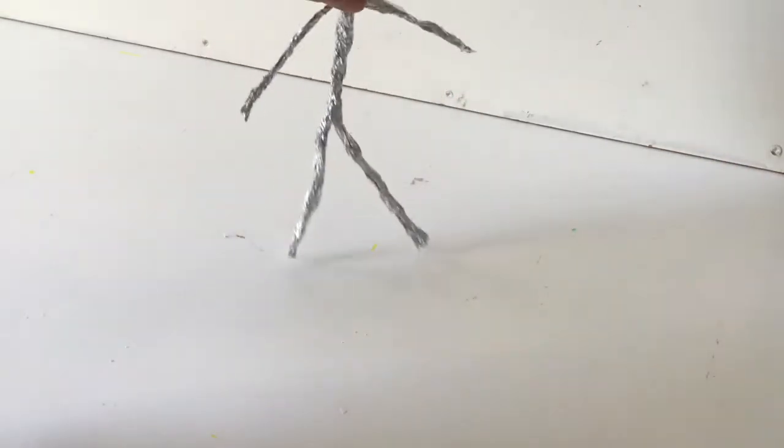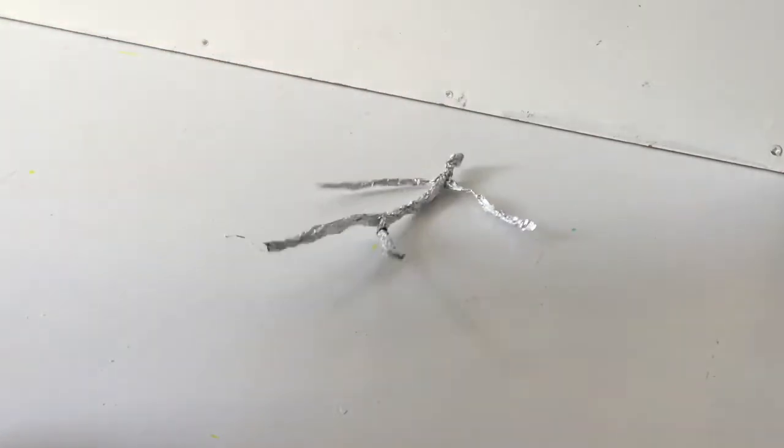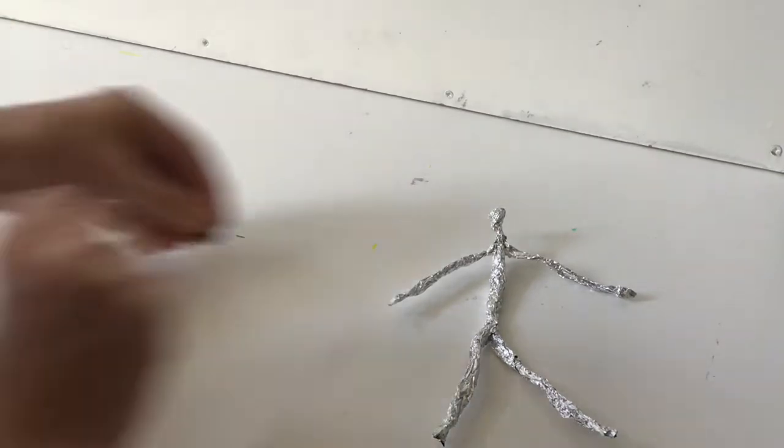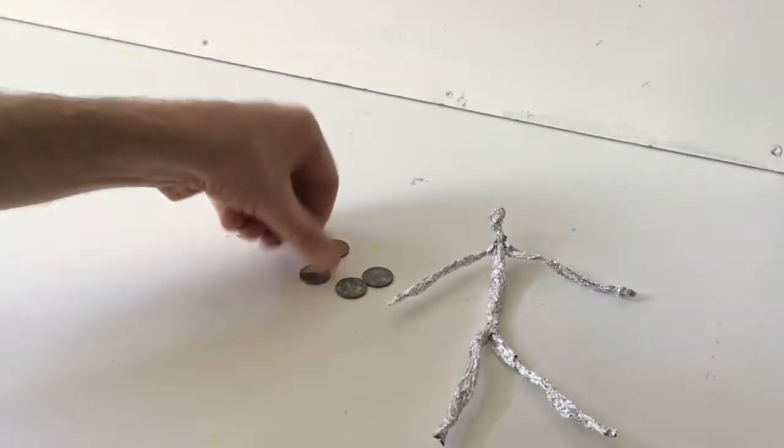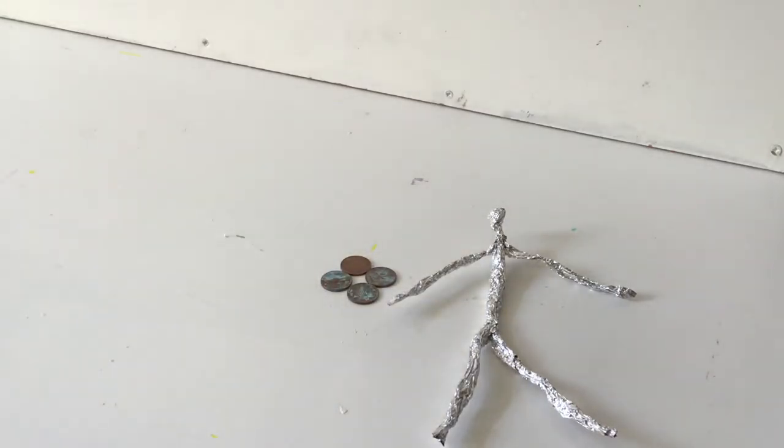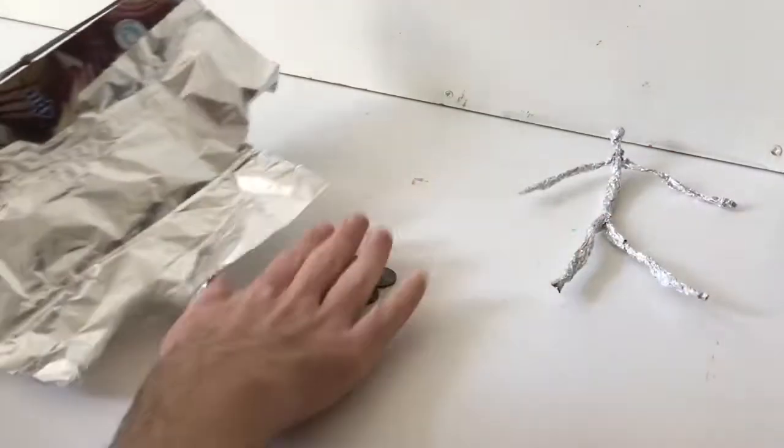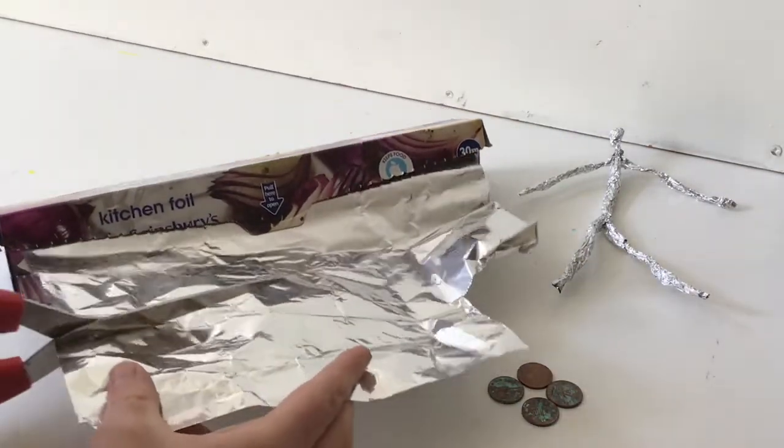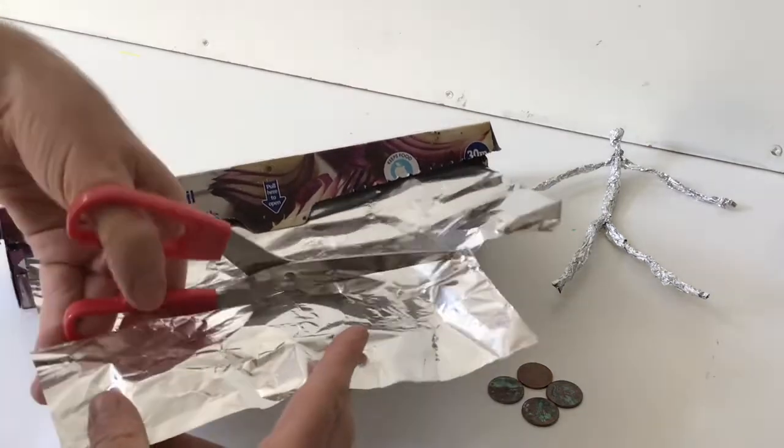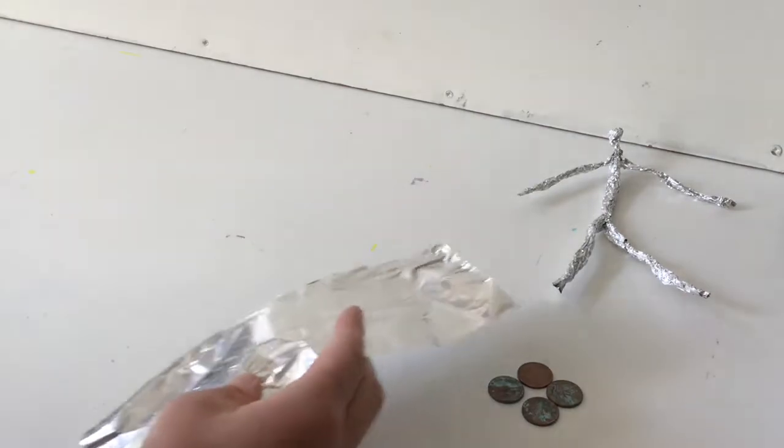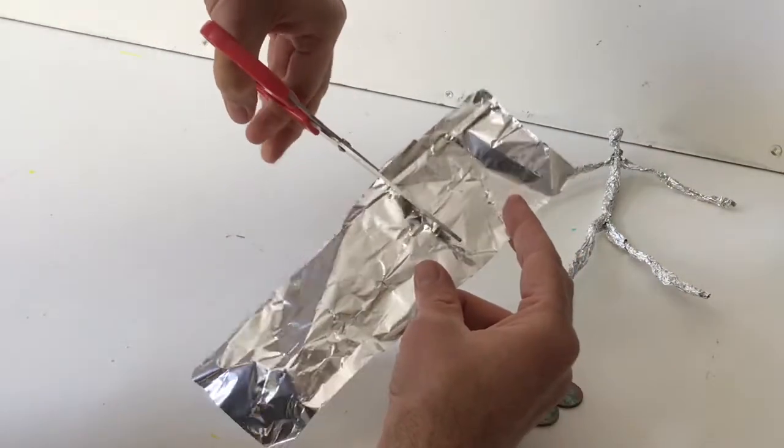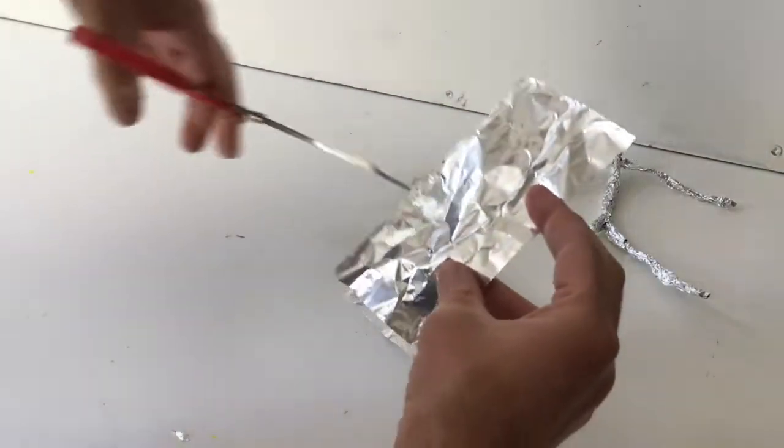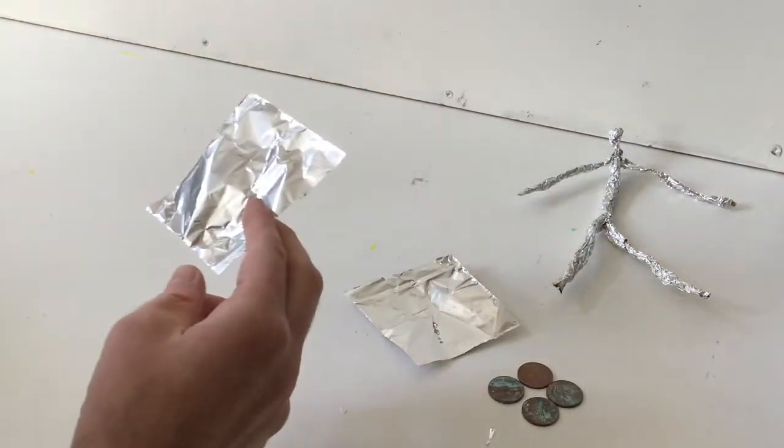Now you might want your figure to stand, and at the moment it won't stand, it's just going to fall over. So that's what we're going to look at next, and that's where you'll need your pennies. You can use any coins at all, it doesn't matter, or you might have something else that you can use, you could try buttons or whatever you've got. And you'll need a bit more tin foil, so I'm just going to cut a strip off and then just a square or a rectangle. It needs to be a bit bigger than the pennies. So I need two of those.